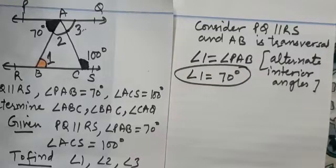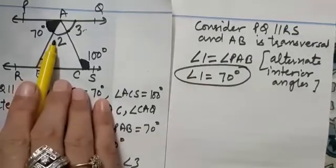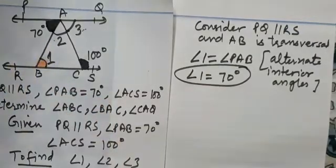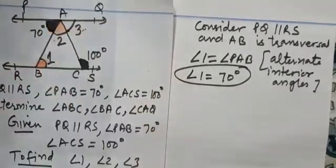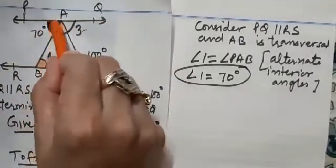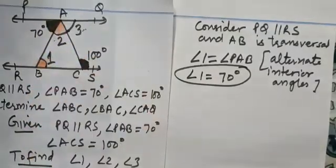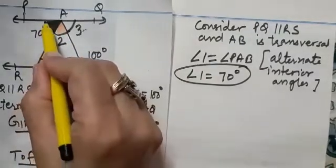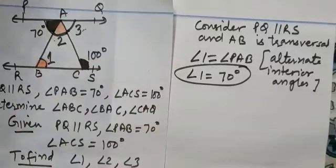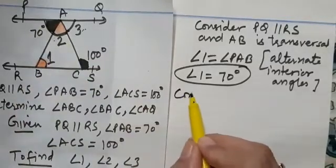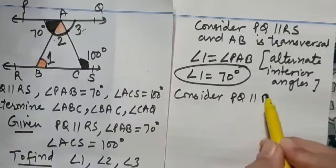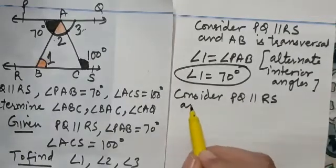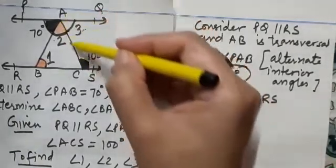Now, coming to angle 2. Now, observe carefully. Here, I am shading this angle 2 along with this 70 degrees. Let us mark this angle 2. Let us mark this complete. So we are considering PQ parallel to RS again and here AC is transversal.